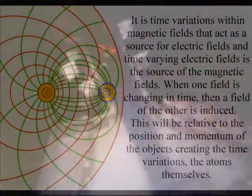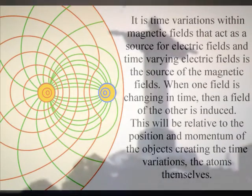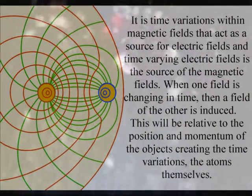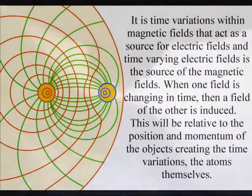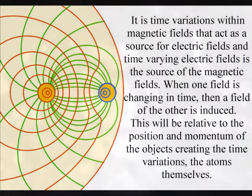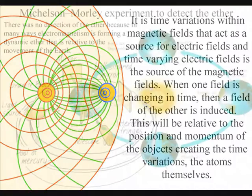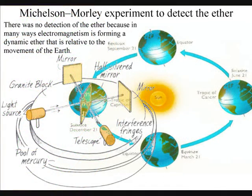Within such a dynamic process we can think of electromagnetism as an interactive ether that moves relative to the earth. Therefore it would not show up in any experiment that was relative to the movement of the earth.